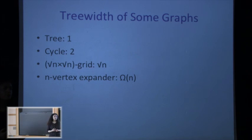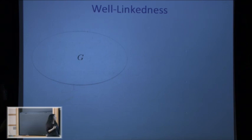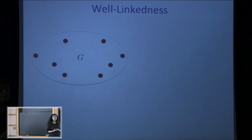Now I want to define another notion that is closely related to tree-width — you can think of it as a different way of defining tree-width — and this notion is called well-linkedness. We look at a subset of vertices of our graph (the red vertices) and define what it means for this set to be well-linked in the graph, meaning they are really well connected.